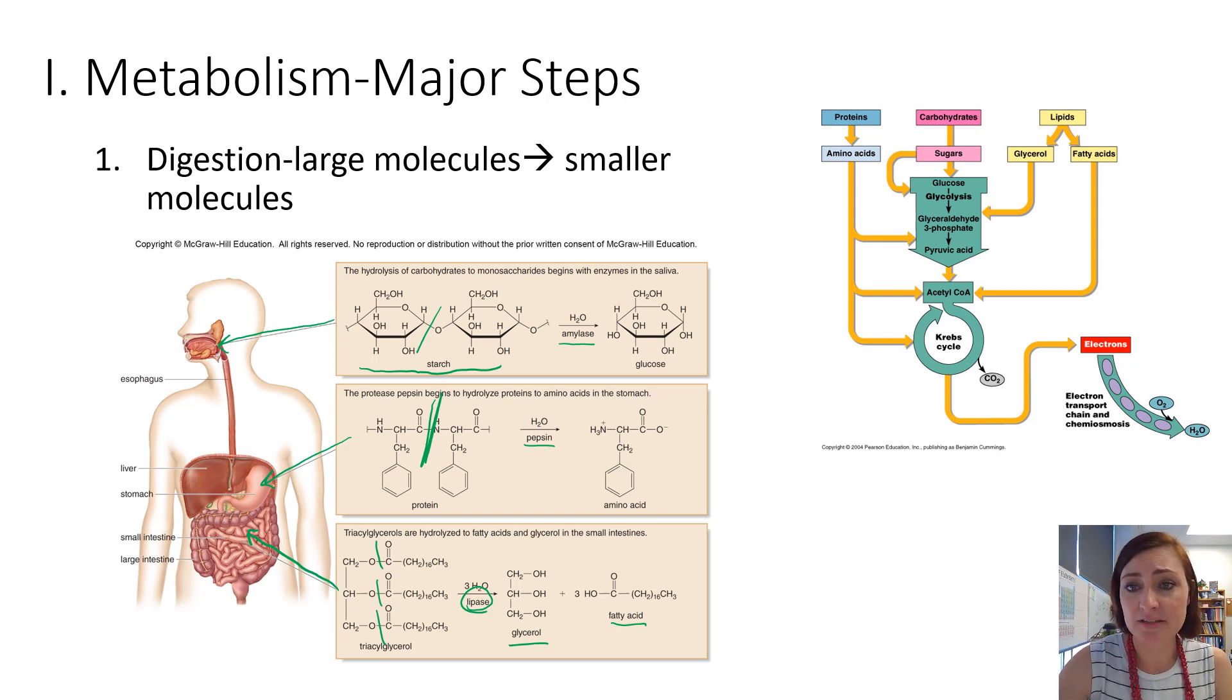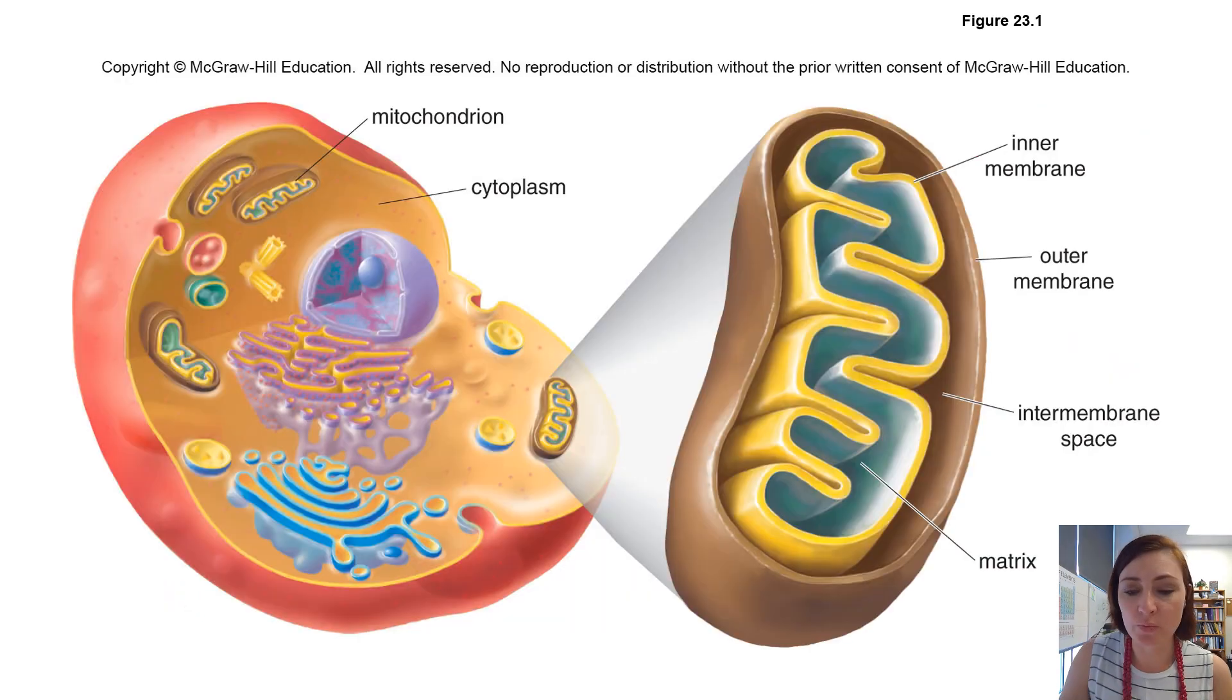So looking at this chart, and again, this is just another version of the same chart, we have covered digestion. That's breaking these larger molecules down into smaller ones. Now we'll talk about the nitty-gritty of how we get them through aerobic respiration and get energy from them. Just kidding. We have to talk about the mitochondria really quick before we do that.